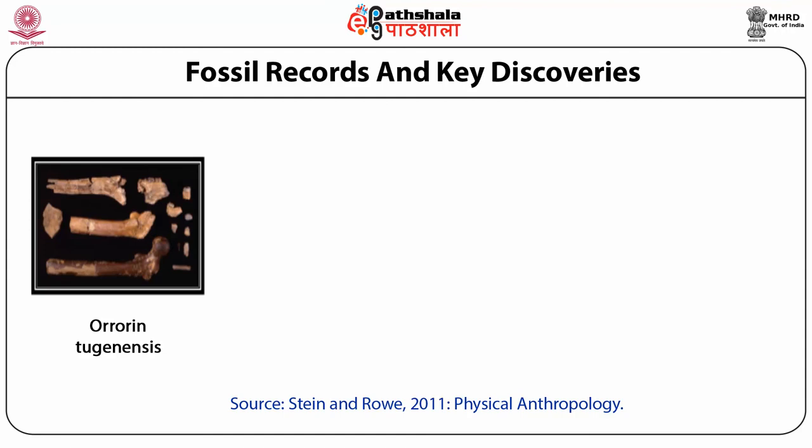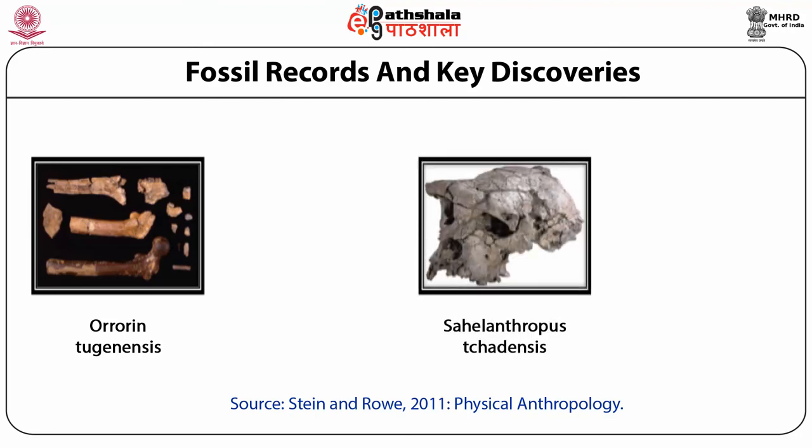Yet there remains a great deal of disagreement among scholars about its erect bipedal gait. Sahelanthropus fossils were recovered from northern Chad during 2001. The fossils are about 7 million years old. The features of the skull are very much similar to chimpanzee, except the size of their canine teeth, which is smaller than chimpanzee.